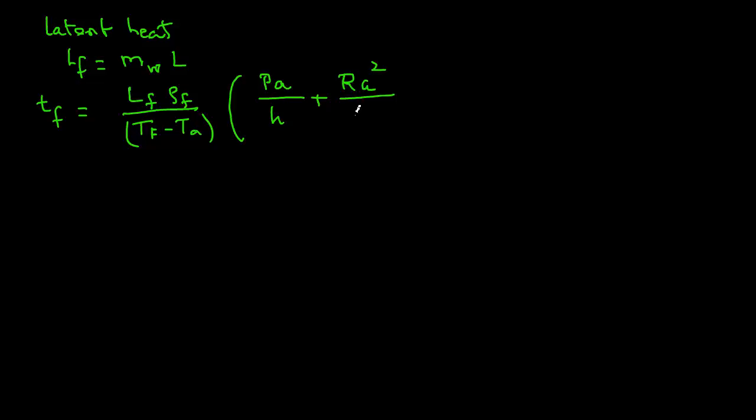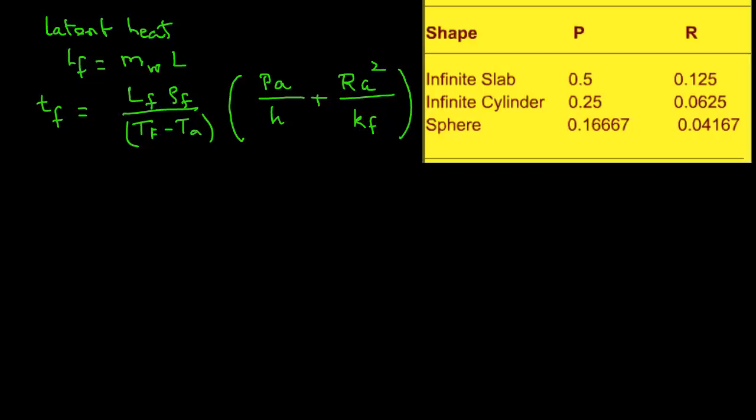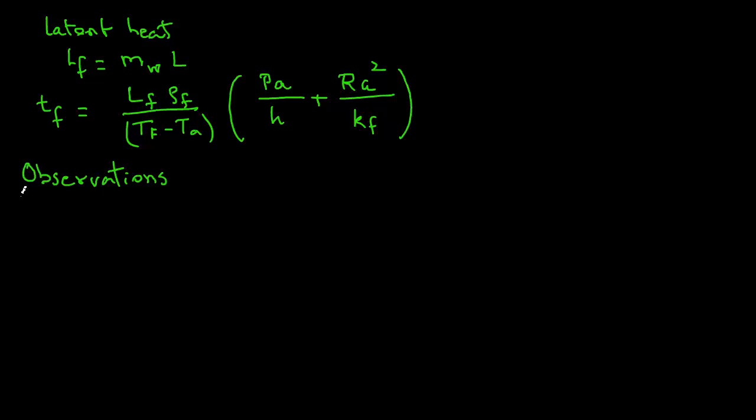P and R are the geometric constants for different shapes of objects used in deriving Planck's equation. For an infinite slab, P equals 1/2 (0.5) and R equals 1/8 (0.125). For an infinite cylinder, P equals 0.25 and R equals 0.0625. And for a sphere, P and R take the values as shown. So we can generalize Planck's equation for slabs, cylinders, and spheres using these shape-dependent constants.